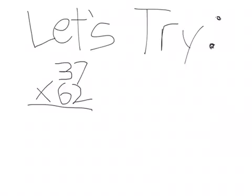First, we can write, let's break 62 into two parts. And that would be 37 times 2 and 37 times 60. Let's do 37 times 2.